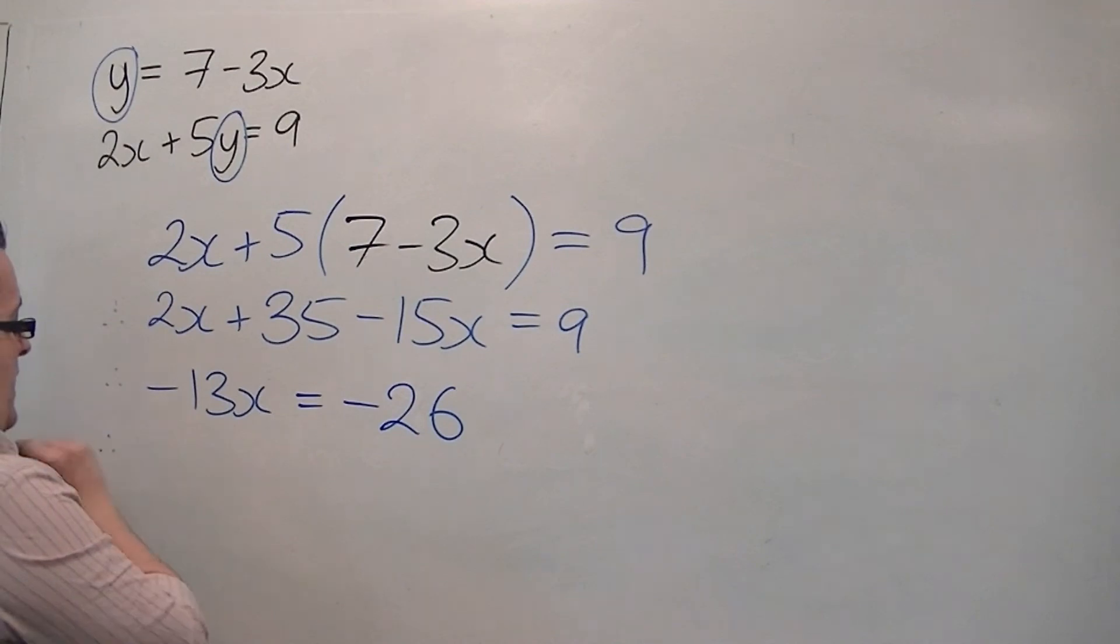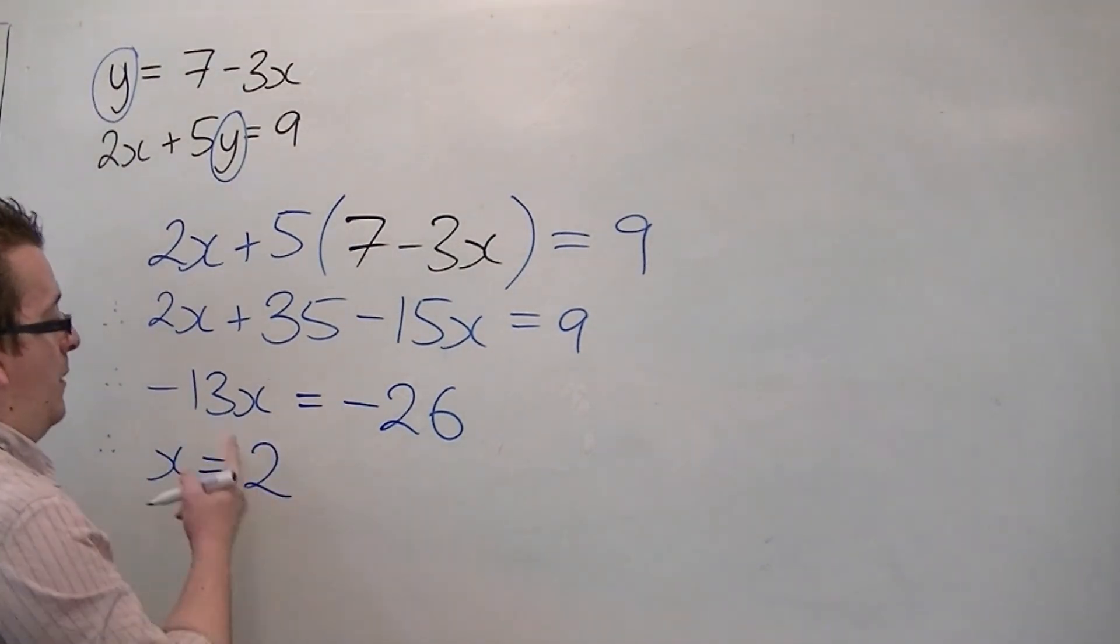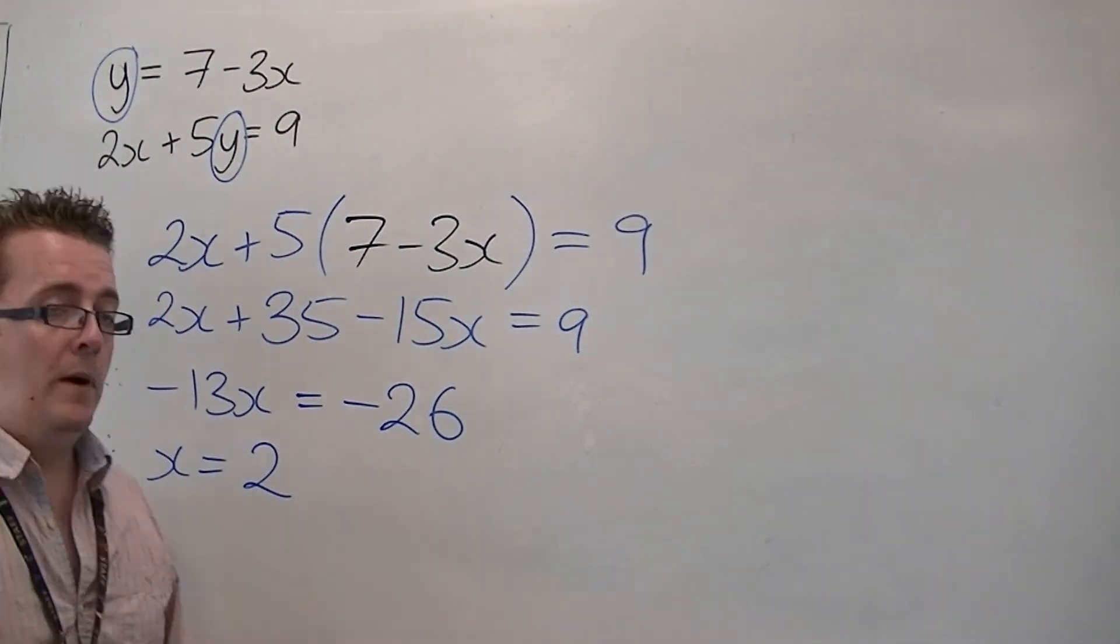So, therefore, x is equal to 2, minus 13 times 2 is minus 26.